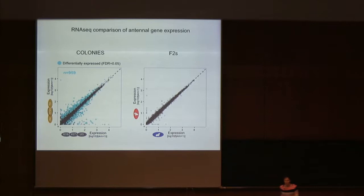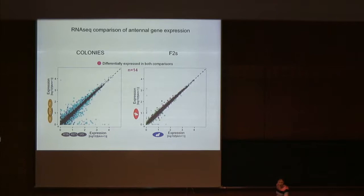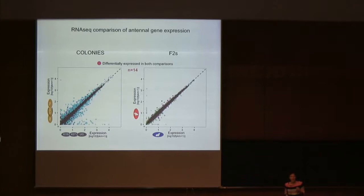RNA-seq experiments on antennae from these two pools of F2s — with technical replication from two different libraries generated from each pool — showed much less scatter away from the one-to-one line and many fewer significant differences, in this case about 50. There are only 14 genes expressed at significantly different levels both consistently across multiple colonies and between F2 individuals generated from the cross between the two colonies. So these 14 genes are our best candidates, and interestingly two of them were odorant receptors.